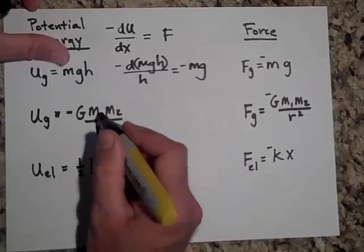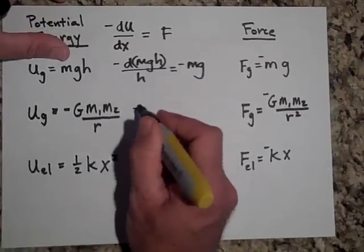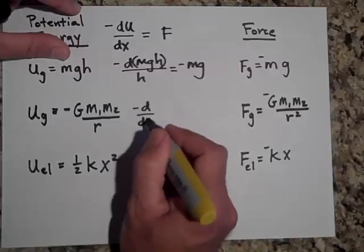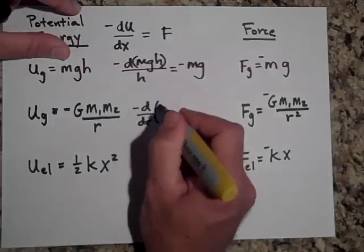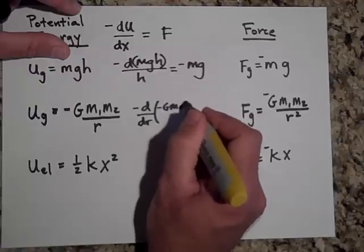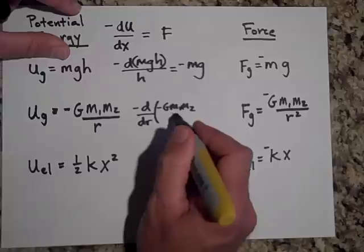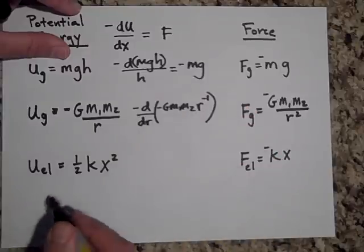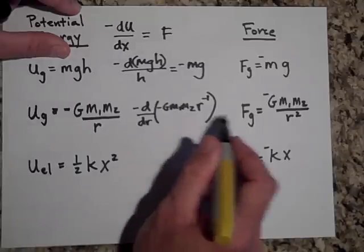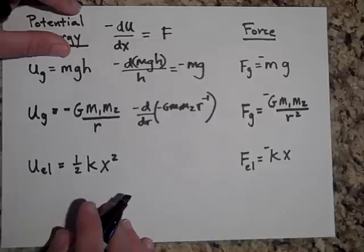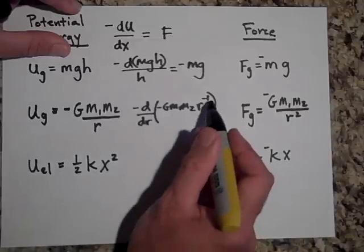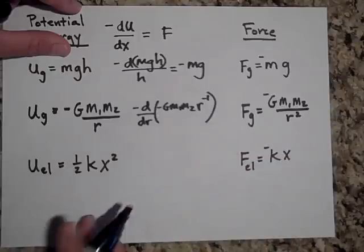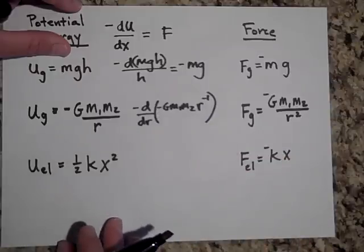Same thing with this one. If I take the negative derivative with respect to R of the following equation, negative G M1 M2, I could put it over R, but I'm going to say R to the negative one. When I take the negative derivative of that, I get this equation. I'll leave it for you to do that, but you bring that negative one over here and then you lop one off of there and you'll see that you get that equation.